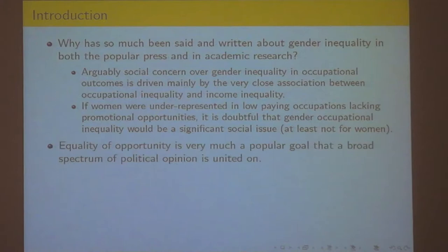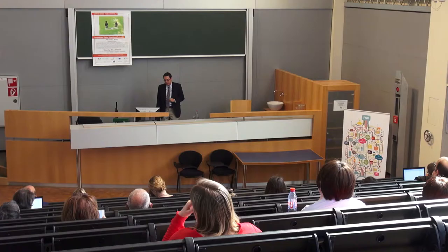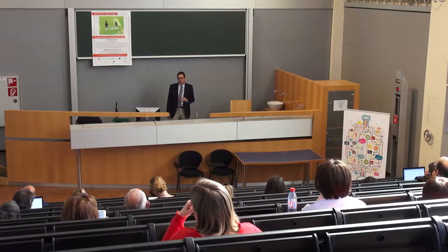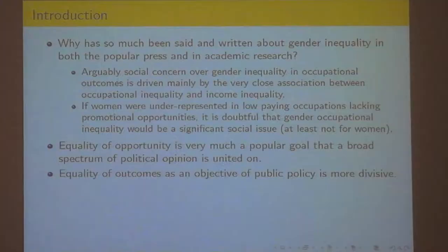I would say that equality of opportunity is probably a universal goal. I think everybody across the political spectrum would say yes, we should have equal opportunity. What gets divisive is equality of outcomes. Some feel we have to have equality of outcomes, and if somebody has an eighth-grade education, they shouldn't be punished for that. Others would say, well, if that's their choice, that's the consequence.